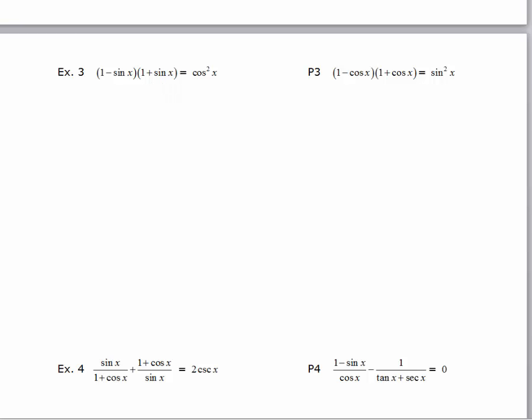Alright, on the left hand side, in example 3, when I multiply out or FOIL, the first gives me 1, the outer gives me plus sine x, the inner gives me minus sine x, and the last gives me minus sine squared x. The inside terms cancel, you certainly could have used the shortcut, a minus b times a plus b would give you a squared minus b squared, which is 1 minus sine squared x. Looking for a trigonometric identity, a Pythagorean identity.